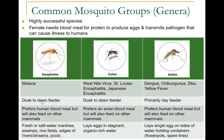With respect to feeding time, Anopheles is mostly a nighttime feeder. Culex feeds from dusk to dawn, so it is also a nighttime feeder. Aedes is primarily a daytime feeder. So Anopheles and Culex are nighttime feeders, while Aedes is a daytime feeder.